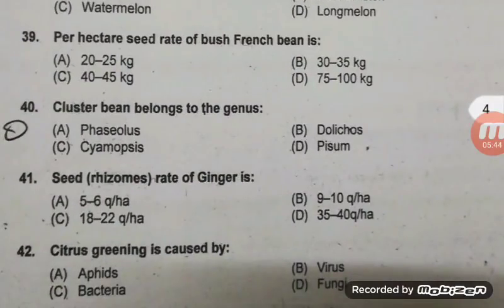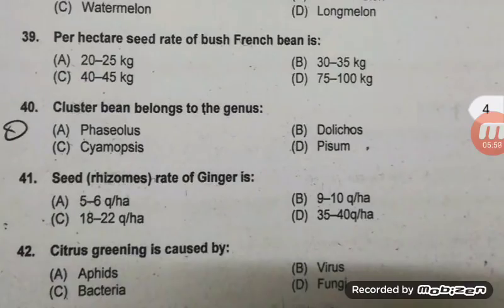Per hectare seed rate of bush French bean: seed rate of pole French bean and bush French bean is different. Generally 65 to 70 kg for bush type; according to the option D is right at 75 to 100 kg. In the case of pole type, 25 to 30 kg per hectare is needed. Cluster bean belongs to the genus Cyamopsis — C is right.